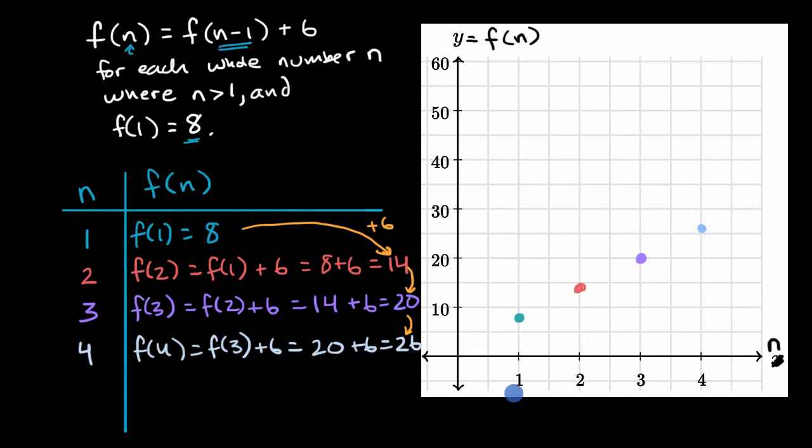So you might notice something very interesting here. It looks like these dots are on a line. Now this isn't a line, because we're only defining this for whole number n's. But we can see it looks like a line. And every time we move forward by one, we are moving up by six.